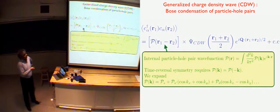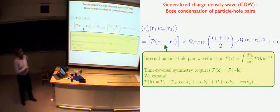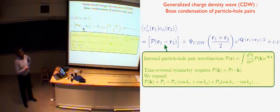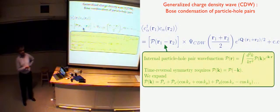Let me describe this pair wave function in terms of a Fourier transform P of K. Assuming time reversal symmetry, this function should be an even function. You can expand this even function in the following way: there's a constant, which we call the S-component; this thing with full symmetry of the lattice but with a cosine, we call the S-prime component; and then there's this one we call the D-component because it looks like x-squared minus y-squared. In principle, if you're given a charge density wave, you can measure these quantities.